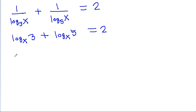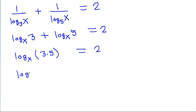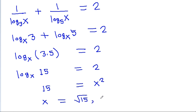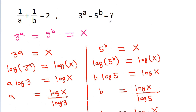This gives log base x of (3 × 5) = 2, that is log base x of 15 = 2, so x² = 15, meaning x = √15 or x = −√15. Since log requires x to be positive, x = √15.